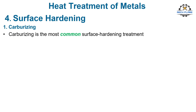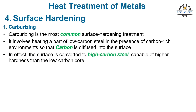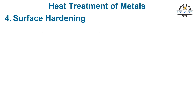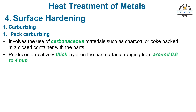Carburizing is the most common surface hardening treatment. It involves heating a part of low-carbon steel in the presence of a carbon-rich environment so that carbon is diffused into the surface. In effect, the surface is converted to high-carbon steel, capable of higher hardness than the low-carbon core. Carburizing has three types: 1. Pack carburizing, 2. Gas carburizing, 3. Liquid carburizing. Pack carburizing involves the use of carbonaceous materials such as charcoal or coke packed in a closed container with the parts. It produces a relatively thick layer on the part surface, ranging from around 0.6 to 4 mm.